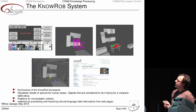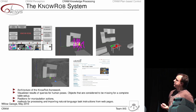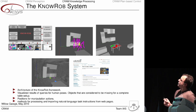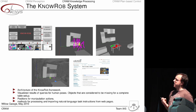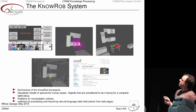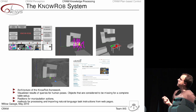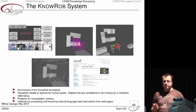Furthermore, we can query and reason about action-related places — basically places that are typical for the robot to stand at while performing a certain type of action, such as opening a cupboard or setting the table. The system can also query the World Wide Web and obtain instructions from natural language. In this case, we used wikihow.com, where instructions on how to set the table are provided, and we wrote a parser to convert the natural language into a program the robot can execute.